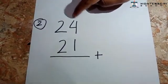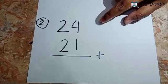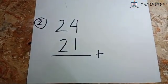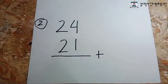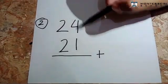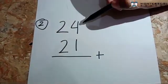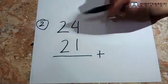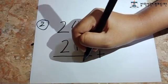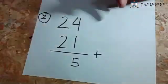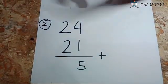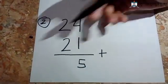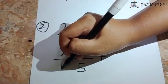Okay, now let's solve number 2: 24 plus 21. Remember, you have to start counting from behind. 4 plus 1 equals 5. Then 2 plus 2 equals 4.